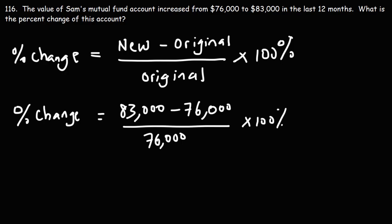So $83,000 minus $76,000, that's a change of $7,000.